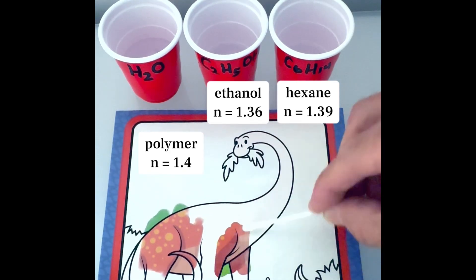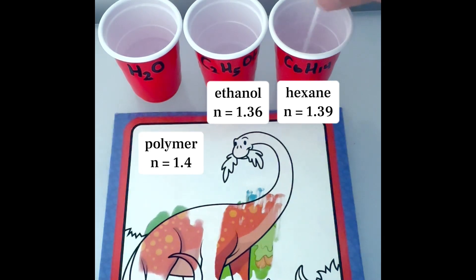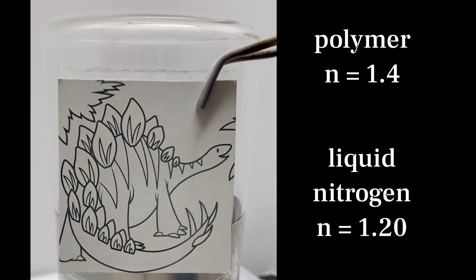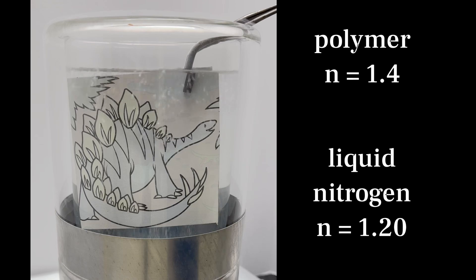Now we can understand why ethanol and hexane also develop color in these pages. Both of these liquids have an index of refraction close to that of the polymer, and this allows the transparent effect to occur. On the other hand, the index of refraction of liquid nitrogen is too far from that of the polymer to allow this to happen.